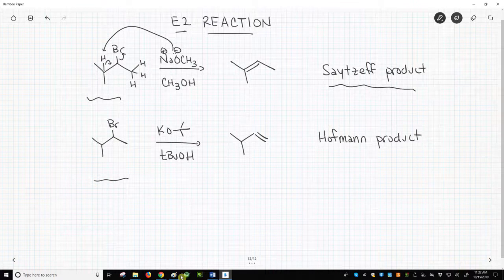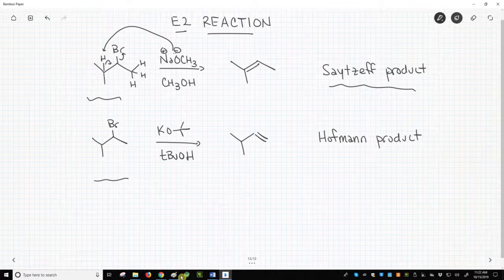In the bottom reaction, the conditions are much the same. The alkoxide base, t-butoxide, is used in an alcohol solvent, t-butanol, to give an E2 product.